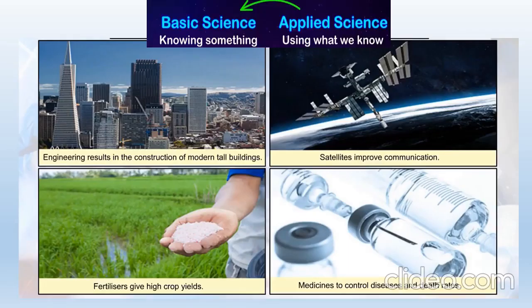So basic science is knowing something, and if we apply it in our life, it is applied science. Here are a few examples of applied science.